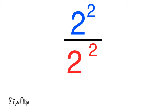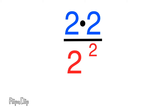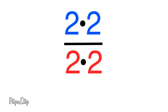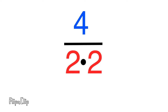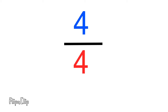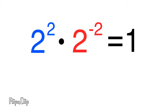For example, two to the power of two means two times two on top, and two to the power of two also means two times two on the bottom of the fraction. Since two times two is four, and two times two is four, then four divided by four equals one. We just proved that two to the power of two times two to the power of negative two equals one.